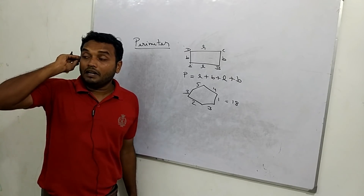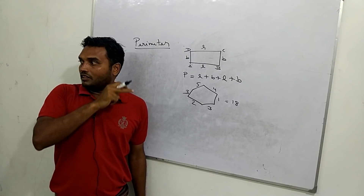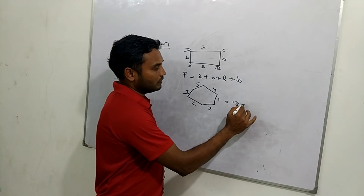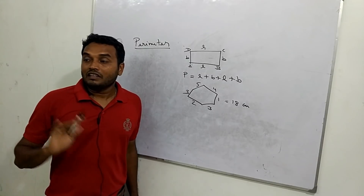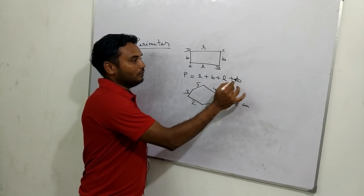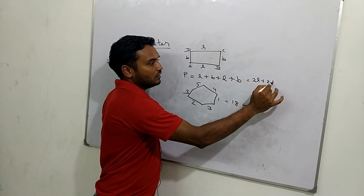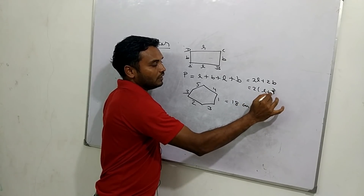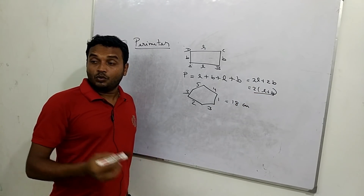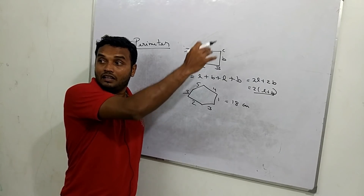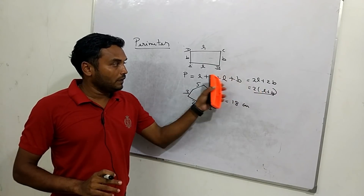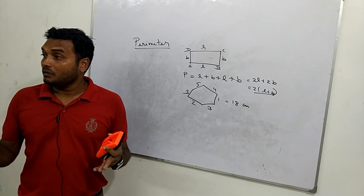What do you say — perimeter? 2 times L plus B. What do you think? 2 times L plus B. Some answers will be marked. 2 times L plus B — perimeter is clear.